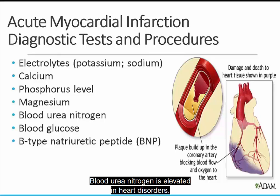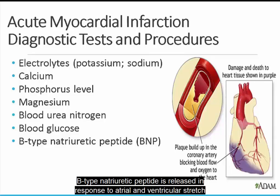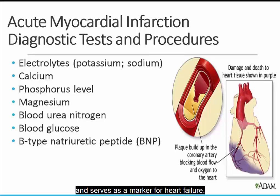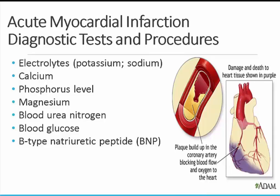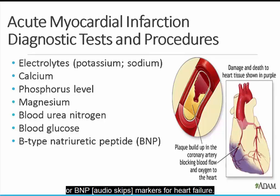Blood urea nitrogen is elevated in heart disorders. Blood glucose: an acute cardiac episode can elevate blood glucose. B-type natriuretic peptide is released in response to atrial and ventricular stretch and serves as a marker for heart failure. Increased levels of BNP are markers for heart failure.